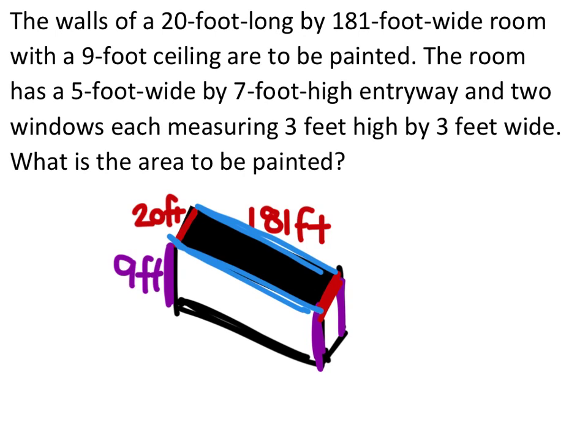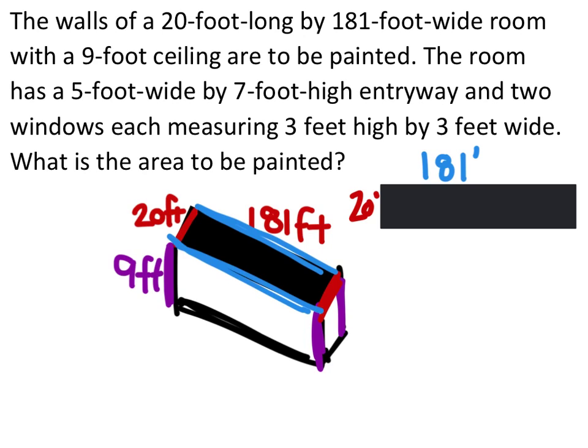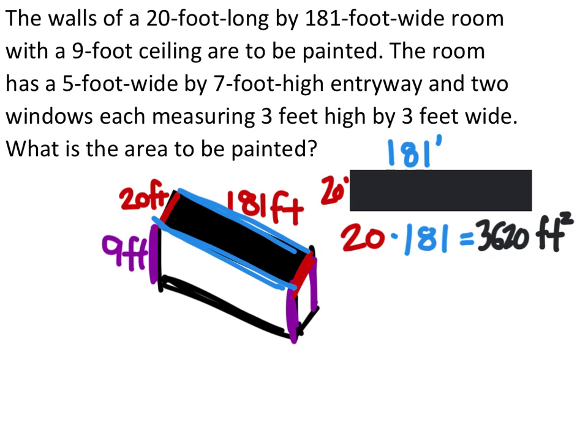We need to look at each of these rectangles individually. So if I look at the ceiling, it is a 20 by 181 foot ceiling. In order to know how much area will need to be painted on just the ceiling, I'm going to take both of those and multiply them together. And that gives me an area of the ceiling, which is 3,620 feet squared.